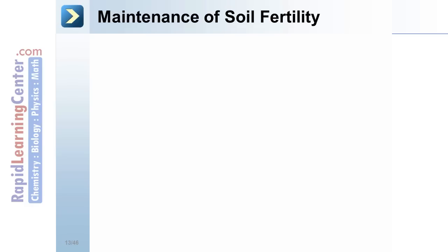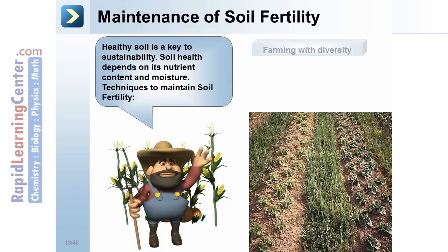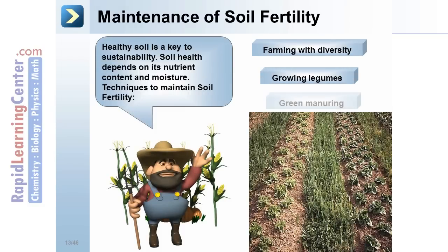Healthy soil is a key to sustainability. Soil health depends on its nutrient content and moisture. Techniques to maintain soil fertility include farming with diversity, growing legumes, green manuring, and animal manuring.